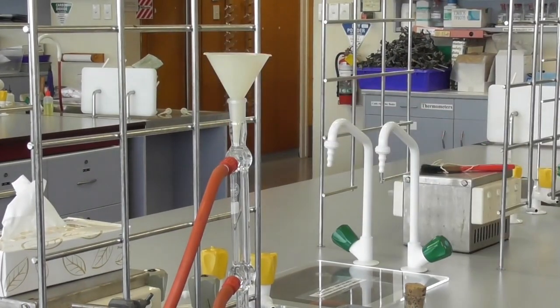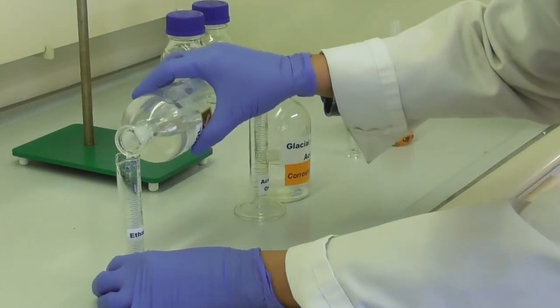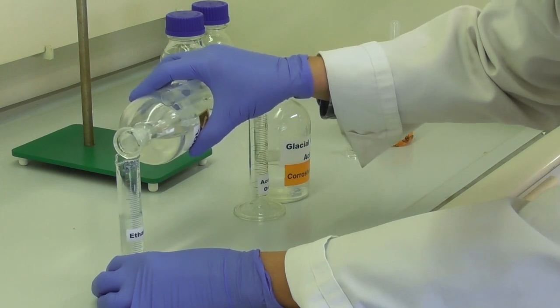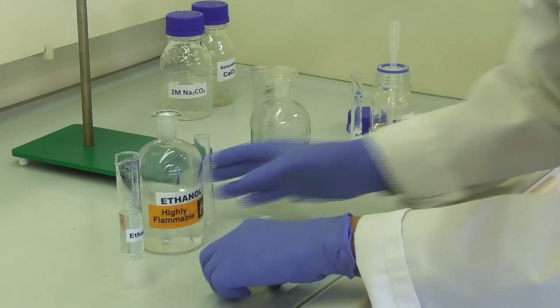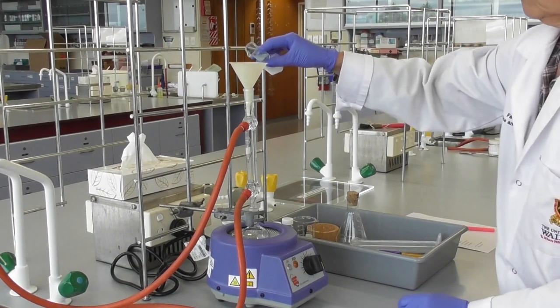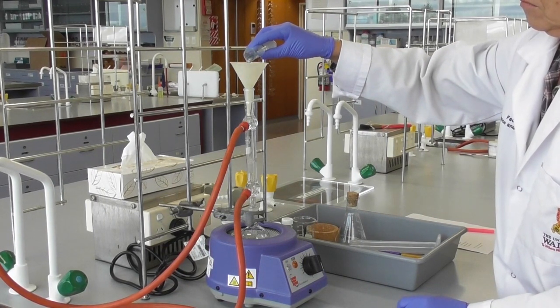Next, we add a funnel on top of the condenser. In the fume hood, we measure out the first reagent, which is 15ml of ethanol. We take this to the apparatus and add it through the condenser into the flask.